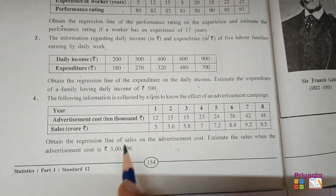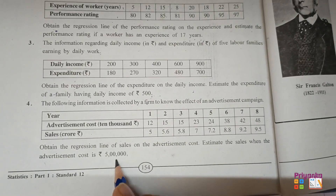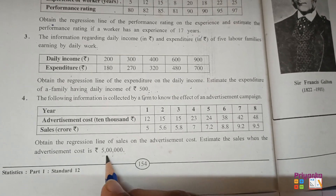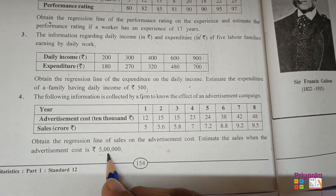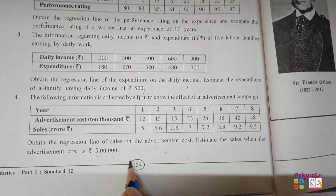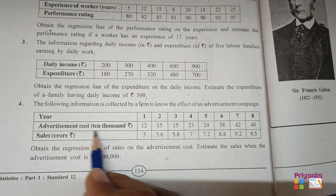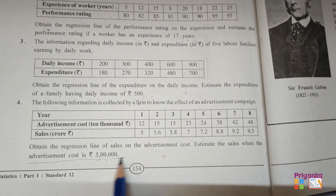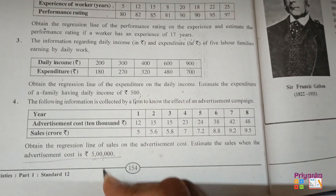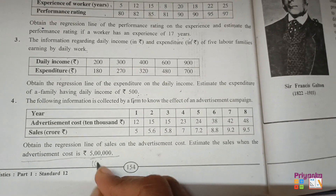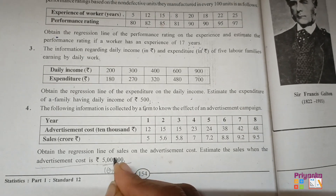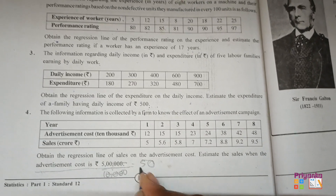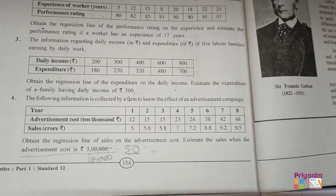Estimate the sale when the advertisement cost is 5,000. Now remember, this is extra information given to you — that becomes your X value. Don't directly take 5,000. Here you can see the advertisement cost is in 10,000, so just divide it by 10,000. You will get X value as 0.5.